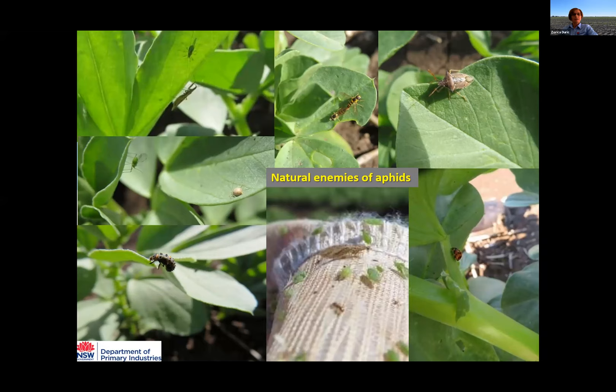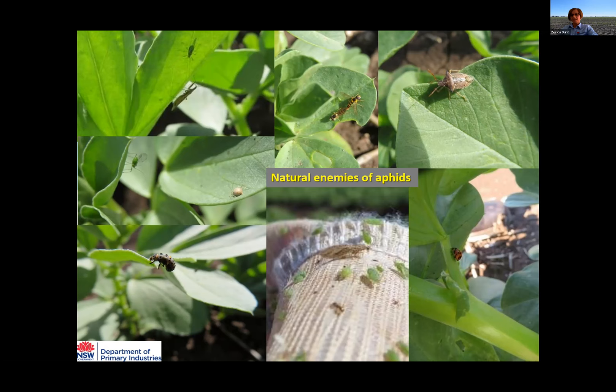Finally, pay attention to the many natural enemies of aphids present in your paddock — hoverflies, lacewings, lady beetles, and other beneficial insects. They are very important for balancing pest populations and complement your use of insecticides to slow down aphid reproduction. That's all from me — thank you.